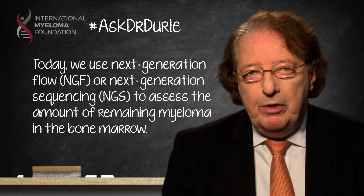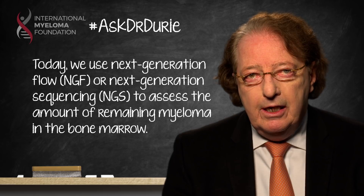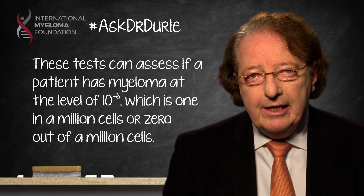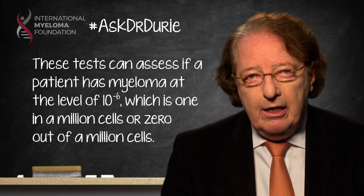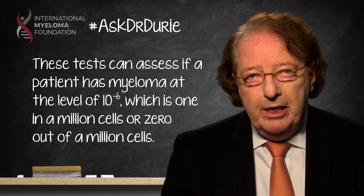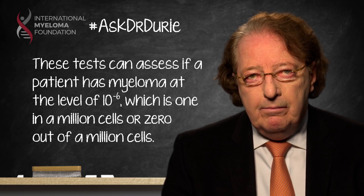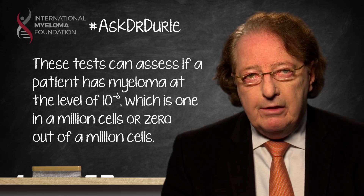This is called the 10 to the minus 6 level, and this is an important cutoff — zero out of one million cells counted in the bone marrow. This means no myeloma cells at that level, which is a level at which patients clearly do much better in terms of the length of their remission and overall survival.